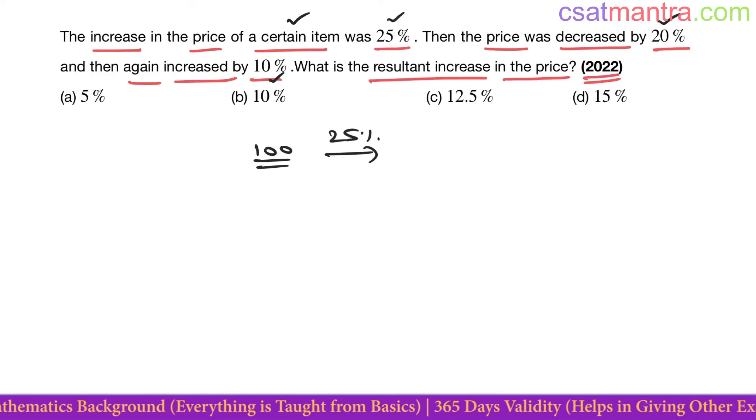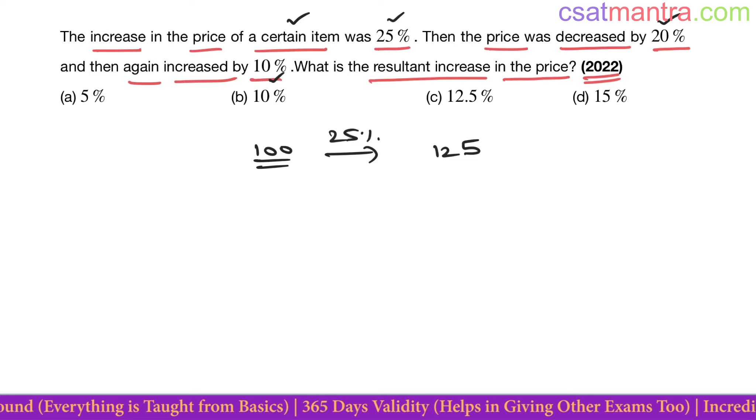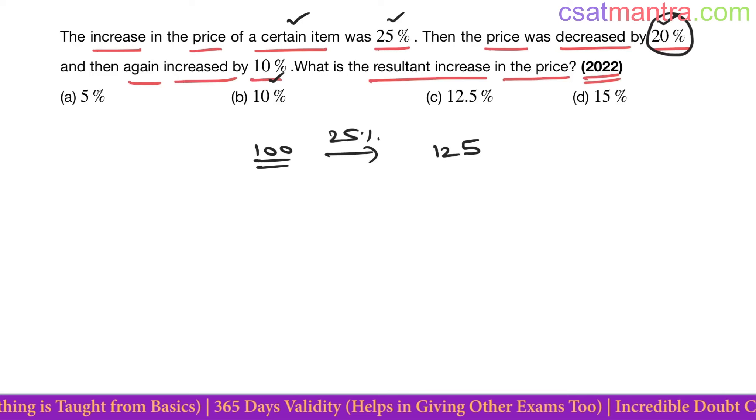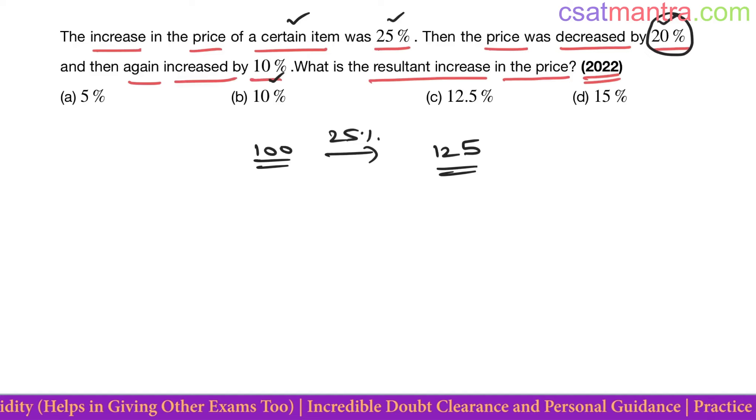Now decreased by 20%. This is decreased by 20%, that means what is 80% of this? 20% decrease—no, 100 minus 20% is 80%. So 80% of 125.